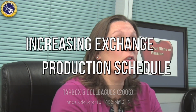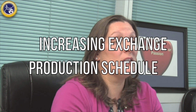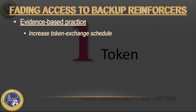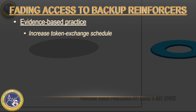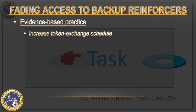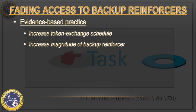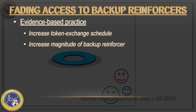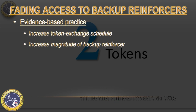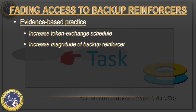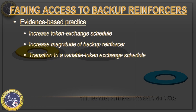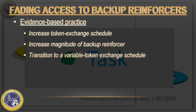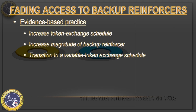Tarbo and colleagues in 2006 suggested that increasing the exchange production schedule is the best. One reason is that as we increase the number of tokens required to produce the backup reinforcer, we tend to increase the magnitude of that reinforcer. One way to mitigate the effects of early tokens signaling those long delays is to transition to a variable token exchange schedule. In doing this, those early tokens do not consistently signal those long delays to reinforcement.